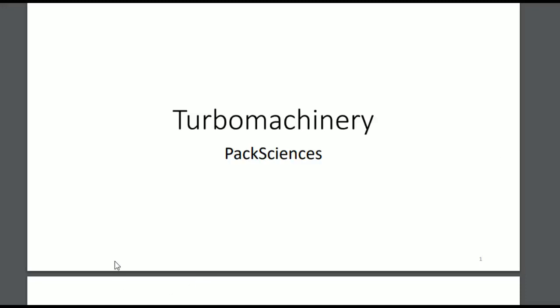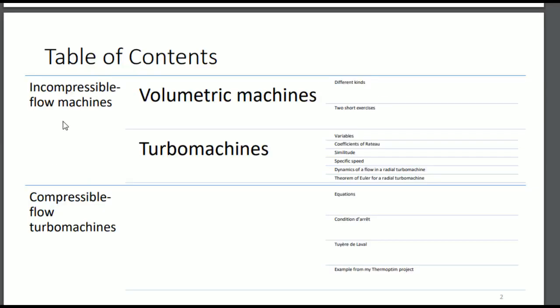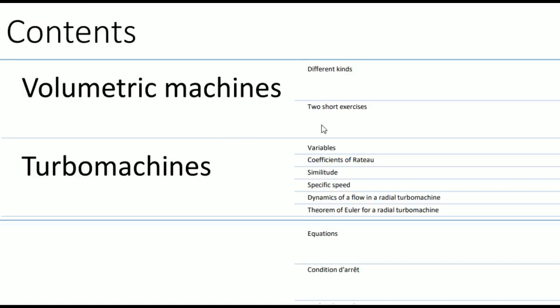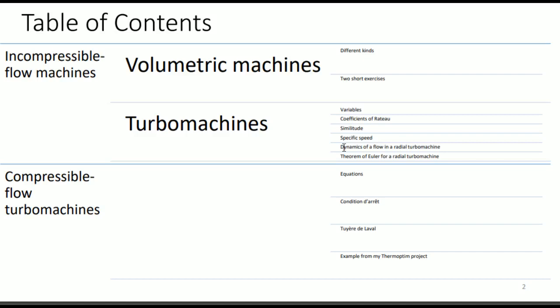Hello, I'm PaxSciences and today we're going to talk about Turbomachinery, or AWI. This is my table of contents. I divided it into two main parts: incompressible flow machines and compressible flow. In incompressible flow I divided into two parts: volumetric machines and turbomachines, and then other smaller parts. In this video I'm going to talk about machines called energetic machines, which involve both volumetric machines and turbomachines. It's called turbomachinery but there is also non-turbo machinery.